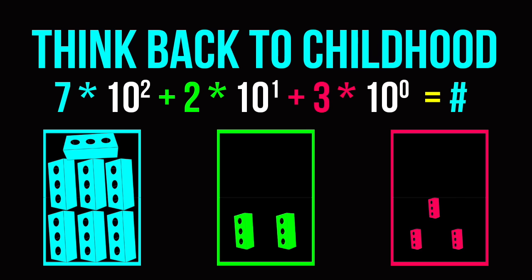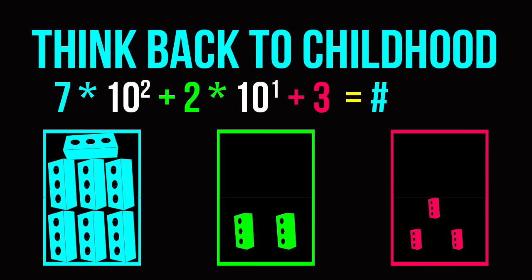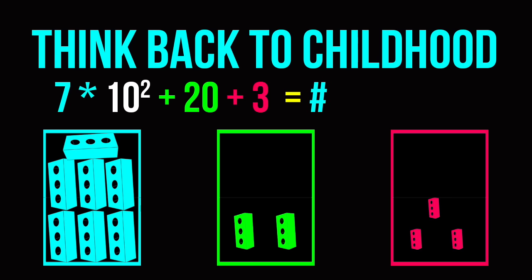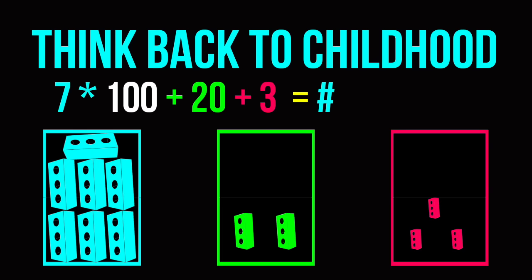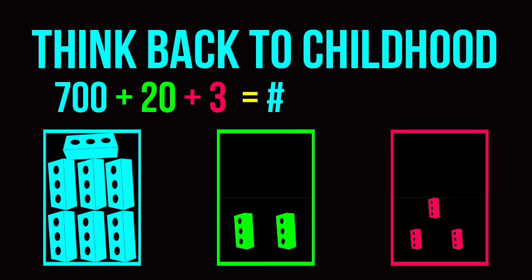What you were really doing for the number 723 is getting your ones by doing 3 times 10 to the zeroth power — 10 to the zeroth is 1, so you were just doing 3 — plus 2 times 10 to the first, which is 2 times 10 equals 20, so you did 20 plus 3. And then you had the 7, and you did 7 times 10 to the second, which was 7 times 100 giving you 700. Then you added 700, 20, and 3 to end up getting 723.